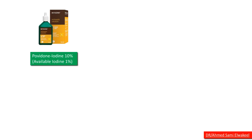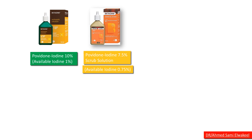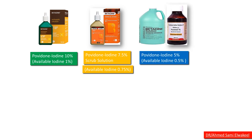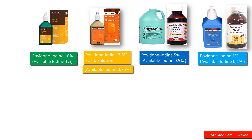Povidone iodine 10%, available iodine 1%. Povidone iodine 7.05% scrub solution, available iodine 0.75%. Povidone iodine 5%, available iodine 0.5%. And povidone iodine 1%, available iodine 0.1%.